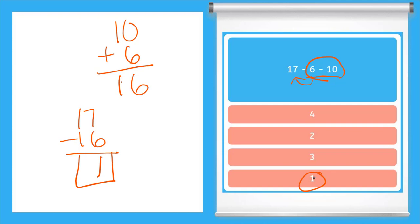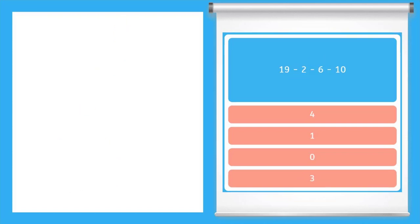Now when you go to solve the problems in the game you can choose the method that works best for you. Let's try one more. Okay, so we now have four terms to subtract: 19 minus 2 minus 6 minus 10.